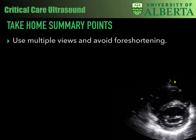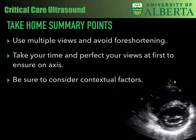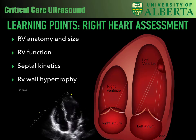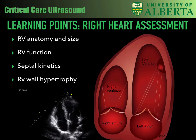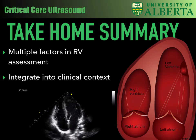Take-home points: Use multiple views. Avoid foreshortening, as this can lead to inaccurate assessment of the RV and LV. Take your time and perfect your views to ensure you are on-axis. Of course, use your judgement, as trying to perfect your views should not impact patient care. Be sure to consider contextual factors. We have gone through RV anatomy and size, RV function, septokinetics, and RV wall hypertrophy. There are multiple factors in RV assessment and it's important to integrate these into clinical context.